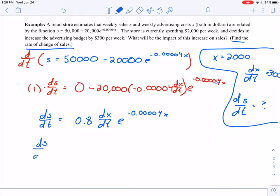So DS over DT, this is what I'm looking for, is equal to 0.8 times DXDT. This is 300. E to the negative 0.00004 times X. X is 2,000. So, okay, what do we get here? Let's multiply this out. And I certainly can't do this in my head. So I've got 240 times E to the negative 0.00004 times 2,000. I have roughly 221.55 if I round to the nearest cent here.